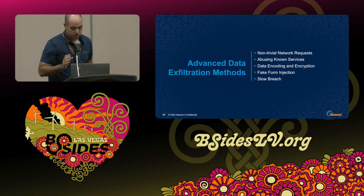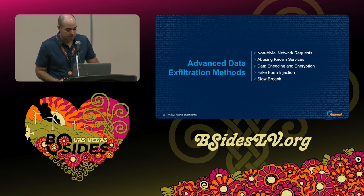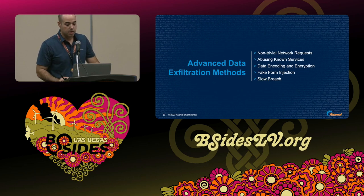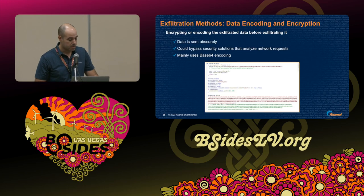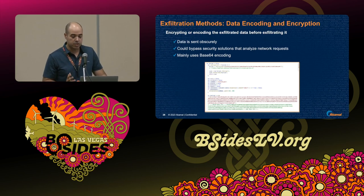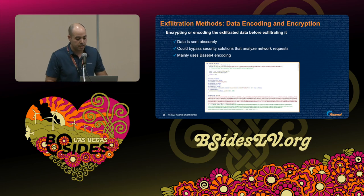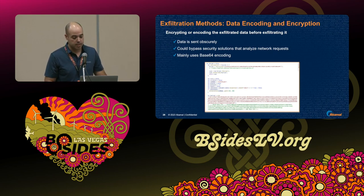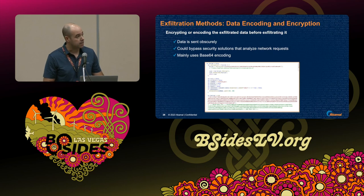Now Roman will explain the data exfiltration methods. On the next slides I'll talk about the last phase of a typical Magecart attack — the data exfiltration phase. The idea is to exfiltrate stolen data to the attacker's command and control server in the most evasive way to avoid detection. The first technique is obfuscation and encryption. The attacker sends data obscurely, not as plain text. Common techniques include Base64 encoding, and in more advanced cases, even asymmetric encryption. There is an example here where encryption was used to encrypt the sensitive stolen data.